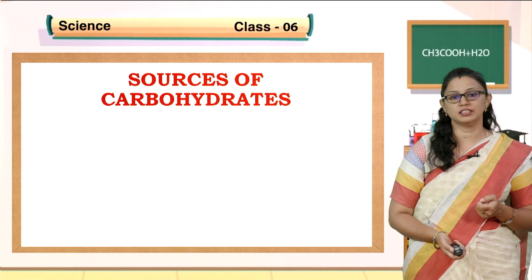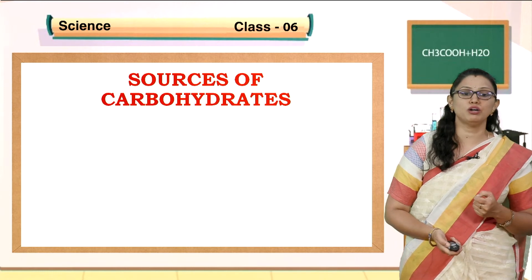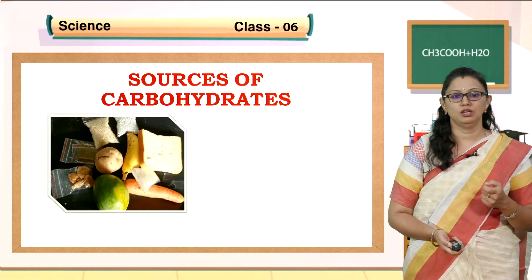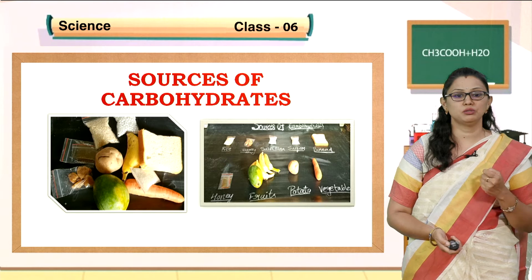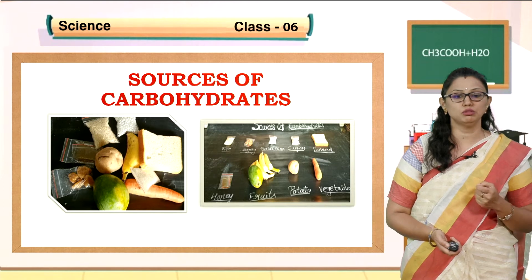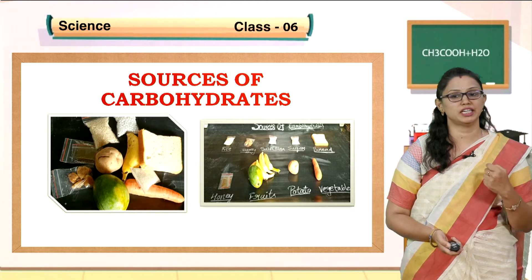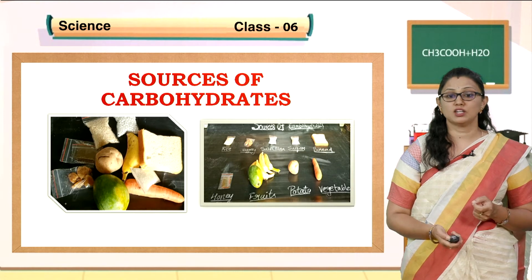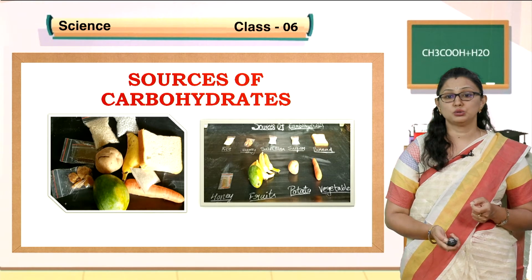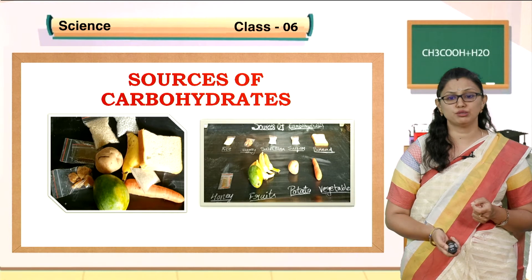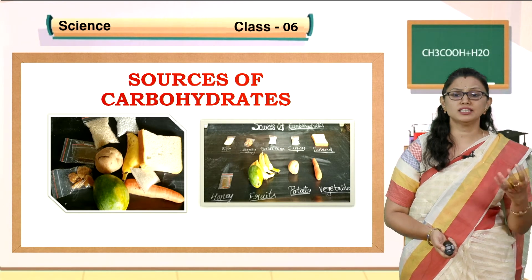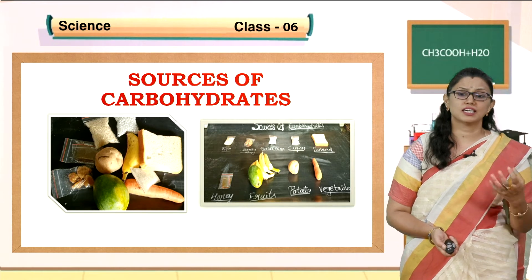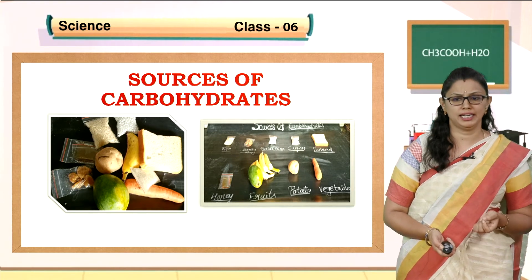Let us look at the sources of carbohydrates. By seeing this picture, you can see what food items contain carbohydrates: rice, jaggery, sabudana, sugar, bread, honey, fruits, potato, and vegetables. These are the food items which consist of carbohydrates.